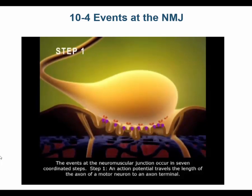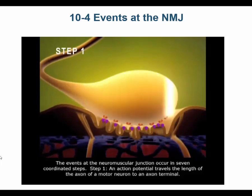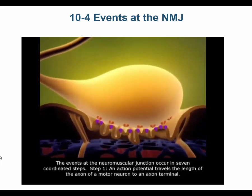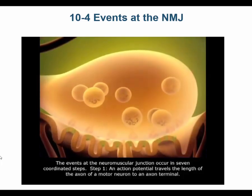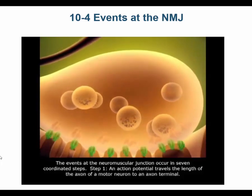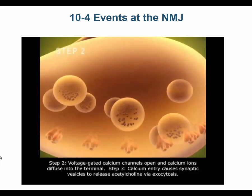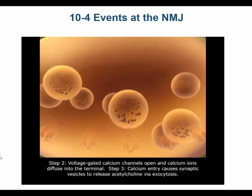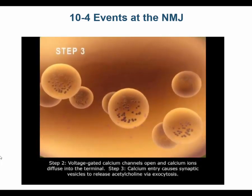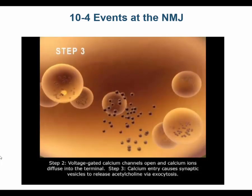Step 1: An action potential travels the length of the axon of a motor neuron to an axon terminal. Step 2: Voltage-gated calcium channels open and calcium ions diffuse into the terminal. Step 3: Calcium entry causes synaptic vesicles to release acetylcholine via exocytosis.